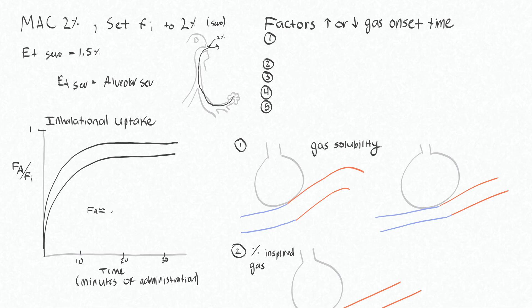So the faster our FA rises, or the faster our FA over FI rises, the faster effects we will have on our central nervous system. And actually, the fastest gas that we have for onset is nitrous.